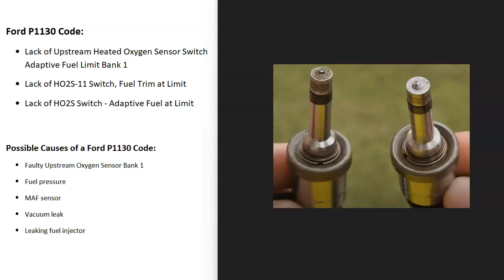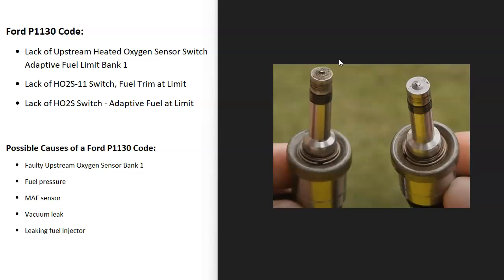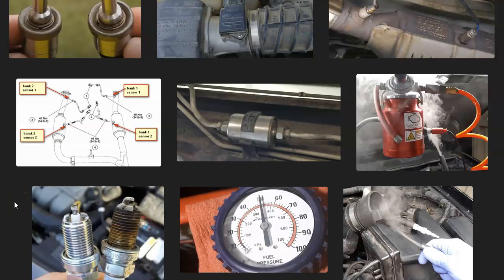Another possible cause is a bad fuel injector on one of the cylinders on bank one. You can remove the spark plugs one at a time on that bank and check the color, then match them to a spark plug burn color chart. If a plug is really black it's running too rich; if it's really white it's running too lean. If you find a cylinder burning incorrectly, you can then test the injector on that cylinder to confirm it's working properly. There are good YouTube videos on testing injectors.